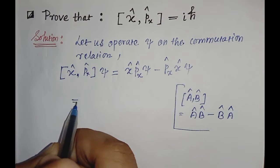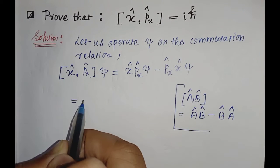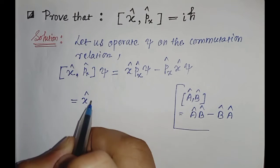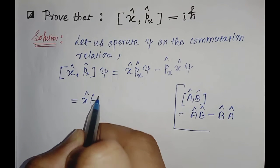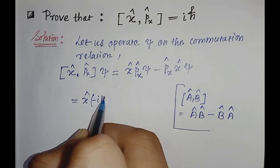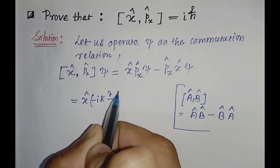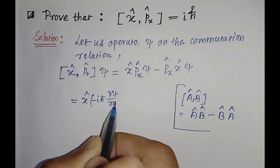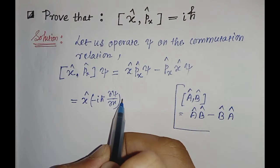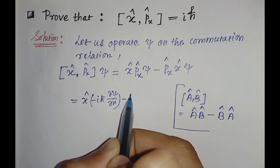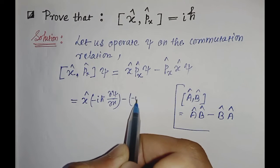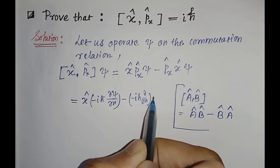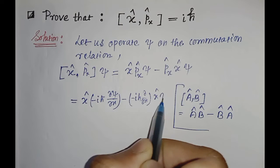Again, in the next step, we can write x, and we know that px can be written as minus iℏ (∂ψ/∂x). And again, px is minus iℏ (∂/∂x) and x ψ.